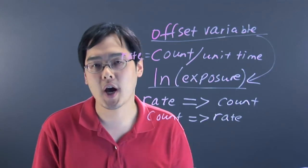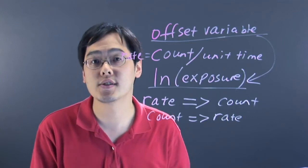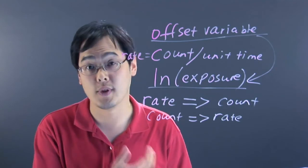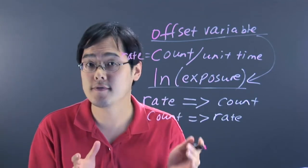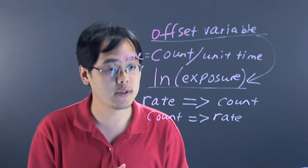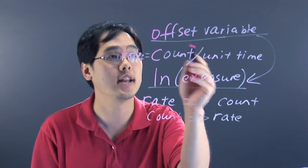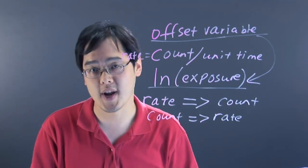What's interesting about the offset variable is that the coefficient is required to be one, so it works with a lot of flexibility. But basically just to summarize, in Poisson models you often convert the dependent variable from a rate to a count and an offset variable takes you from a count to a rate.